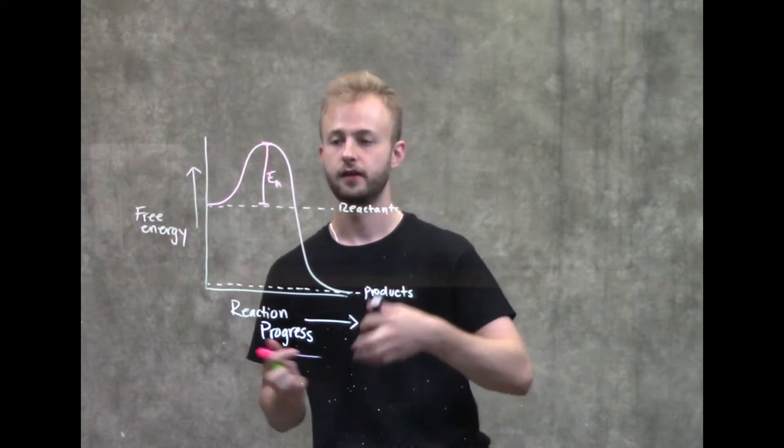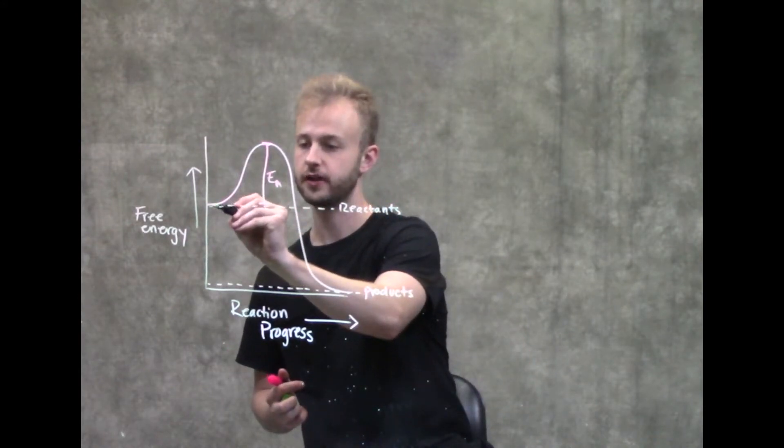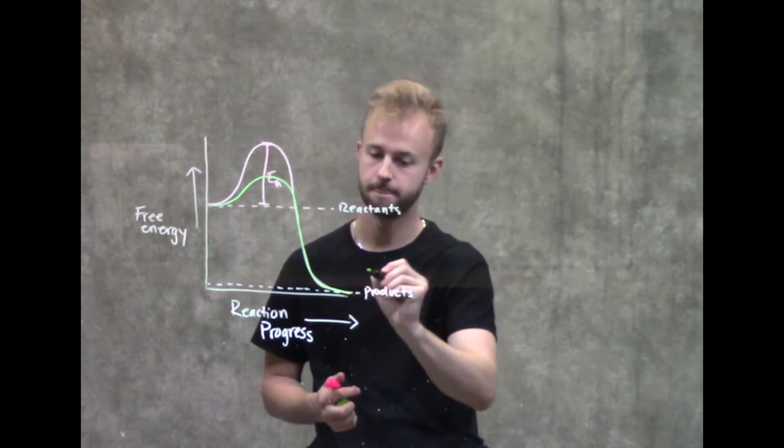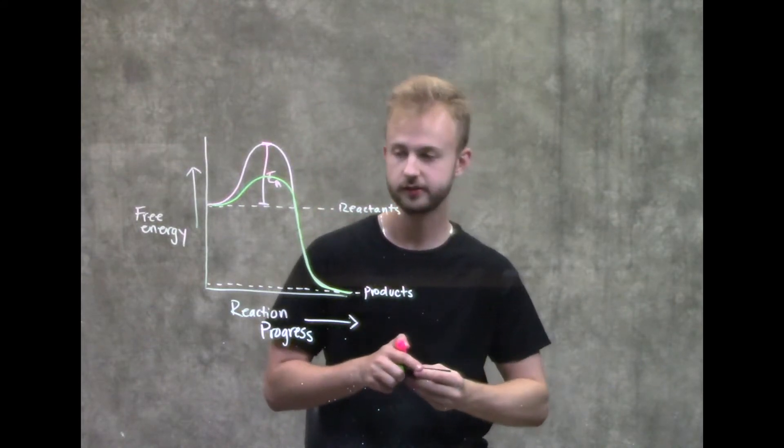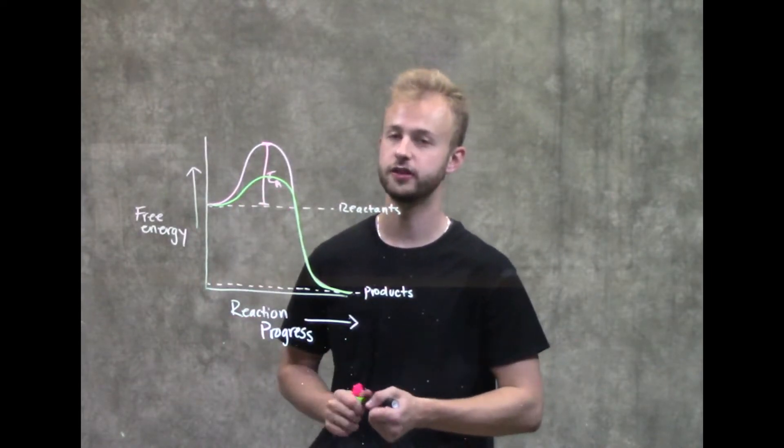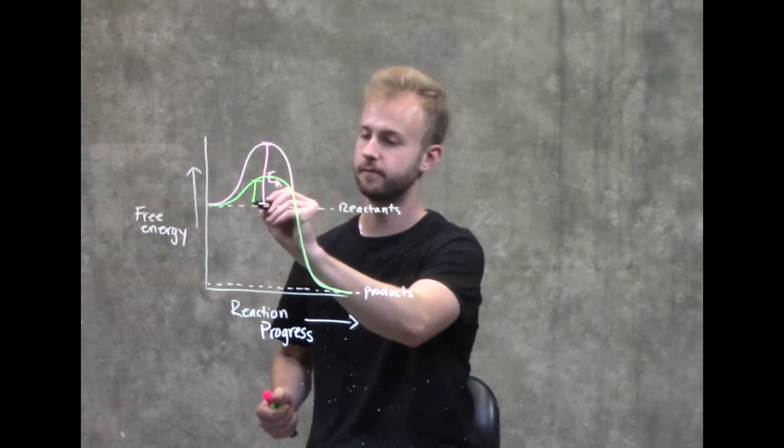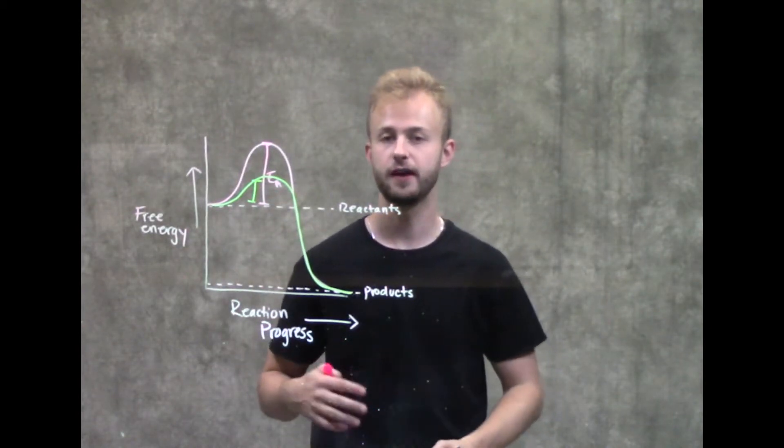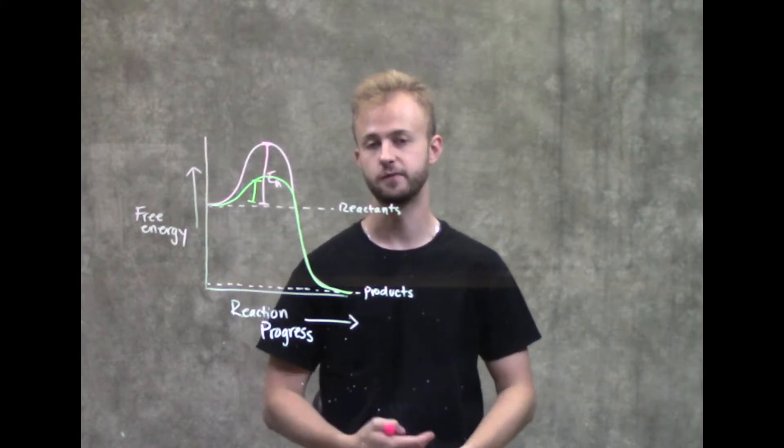When we have an enzyme, our reaction diagram changes to look like this. Your reactants and products stay the same, they end in the same places, but what changes is our energy of activation. When we have an enzyme, our energy of activation is smaller, and so it can let this whole reaction happen faster because it doesn't need as much energy anymore.